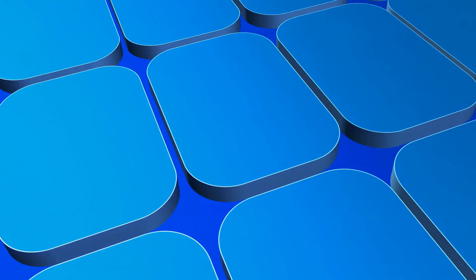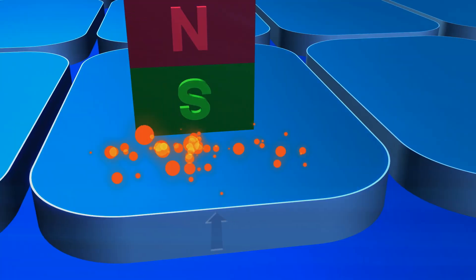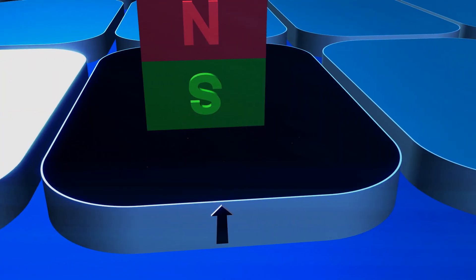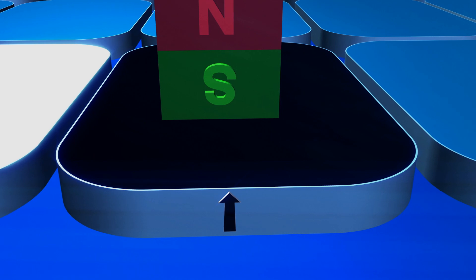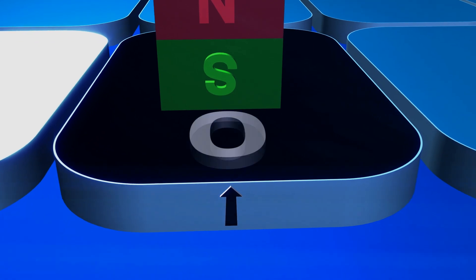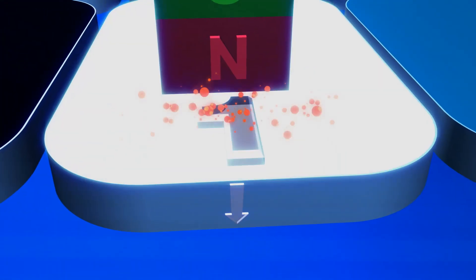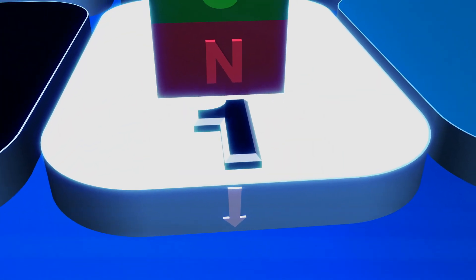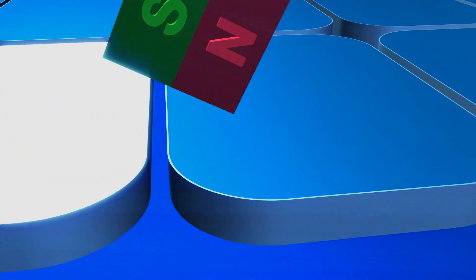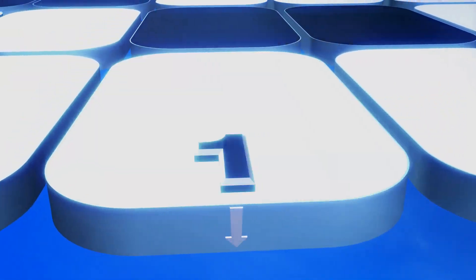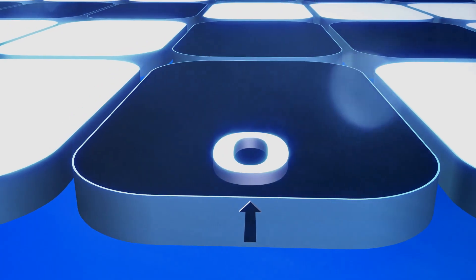The basic idea to save one bit of information is very simple. We use a so-called magnetic domain, which can be magnetized in two different directions. If it's magnetized in one direction, it's a logic zero; if in another direction, then it's a logic one. Now, if we have billions of such domains, we can store any information — for example, your movie. The question is how we can switch the magnetization from one direction to another.